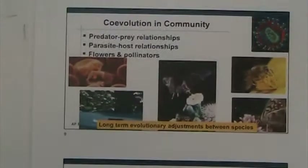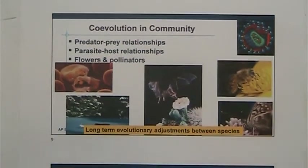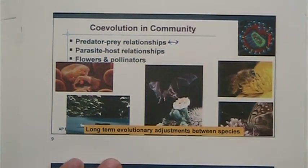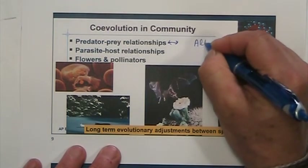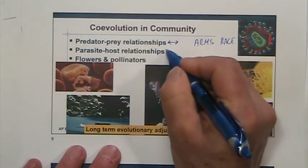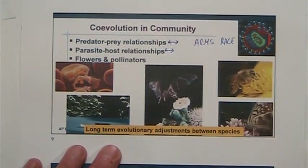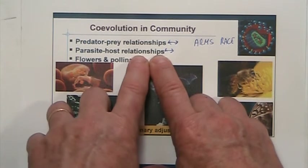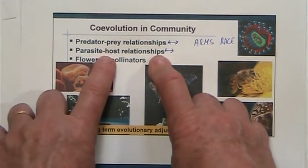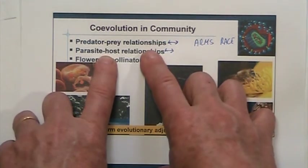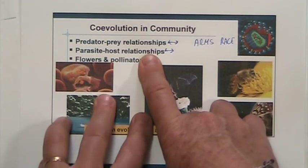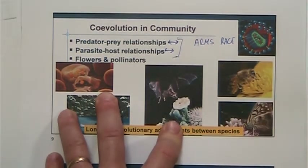So this arms race I told you about between predator and prey — because they drive evolution — the pressure is not only between predator and prey, but there are other interactions that are also driving evolution into what we call this arms race. The other one is hosts and parasites. They live together, the parasite truly depends on the host. So the host is always being selected for a better immune system so it can get rid of the parasite, and the parasite is always being selected for ways to avoid that immune system. So it's a constant race.